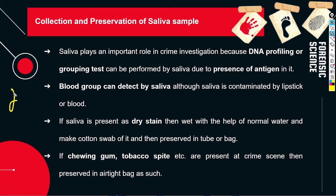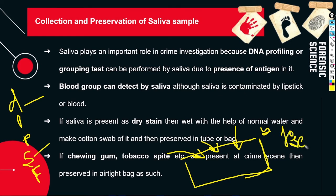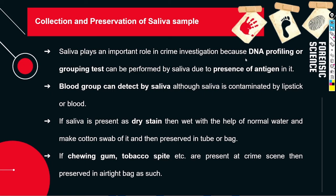We have detected the saliva and packed it, and we have preserved it in airtight bags. After that, we will seal all the evidence. Then we will forward it to FSL. We will take a carton, keep our sealed evidence inside, seal the box properly, and then use a forwarding letter and a copy of the seal. With the forwarding letter, we will send it via a police officer to the FSL. This was our collection, packaging, preservation, handling, and forwarding of saliva evidence.